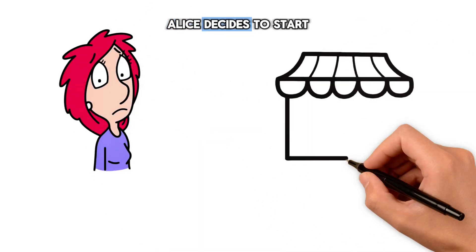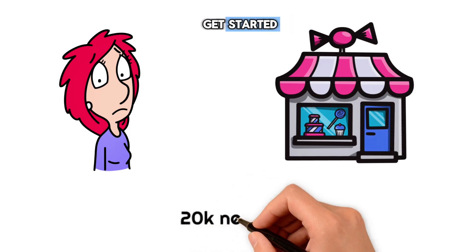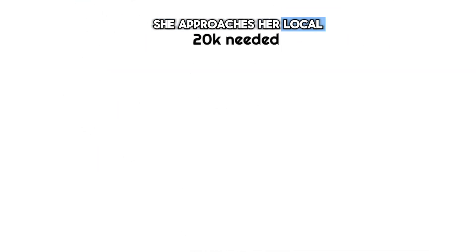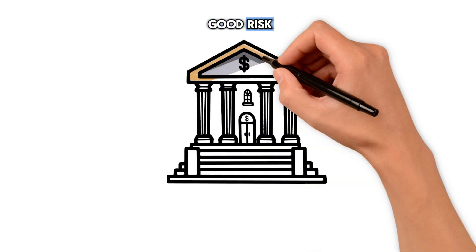Alice's Adventure. Alice decides to start a small bakery and needs £20,000 to get started. She approaches her local bank for a loan. The bank assesses her business plan and decides she's a good risk.